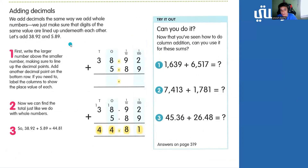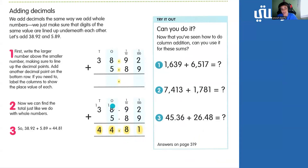Now we're going to add decimals. Here we have 38.92 plus 5.89. We start by adding 9 plus 2, which equals 11 — put 1 down and carry 1 on top of the 9, making it 10. So, 10 plus 8 is 18 — drop down the 8 and carry 1 above the other 8. Now, 9 plus 5 is 14 — drop down the 4 and carry 1 over the 3. Finally, 3 plus 1 equals 4, so we drop it down. The final answer is 38.92 plus 5.89 equals 44.81.